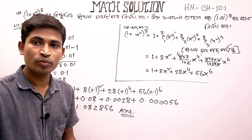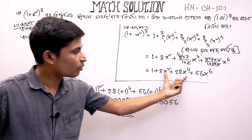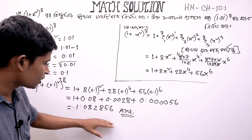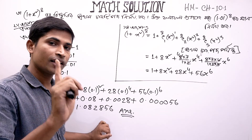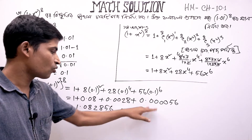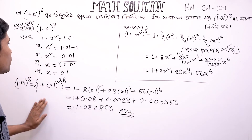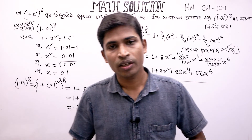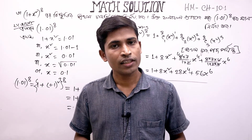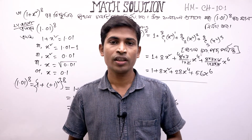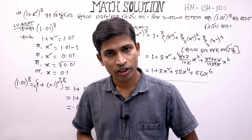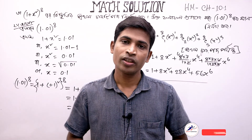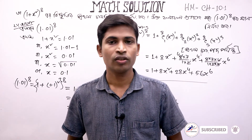6706 – তো আমাদের পরবর্তী দশমিকগুলো লাগবে না, এর কারণ হচ্ছে আমাদের যে ফলাফল বেবর করতে বলা হয়. তাহলে আমরা তার সমস্যার সমাধান করে দেবার চেষ্টা করবো. আজ এখানে এটুকুই. পরবর্তী ভিডিওতে থাকভে. কেউ ভালো থাকো, সুস্থ থাকো, এভাবেই শিখতে থাকো.